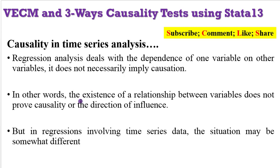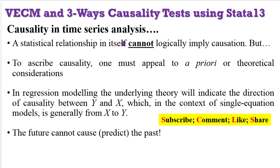In other words, the existence of a relationship between two variables may not prove causality or the direction of influence. But in time series analysis, the situation may be somewhat different. A statistical relationship in itself cannot logically imply causation, but after subjecting such a relationship to further scrutiny, you can infer causality. To ascribe causality, one must appeal to either prior expectations or theoretical considerations. In regression modeling, the underlying theory will indicate the direction of causality between two variables. In the context of a single equation, you are talking about causality from the regressor to the outcome variable.